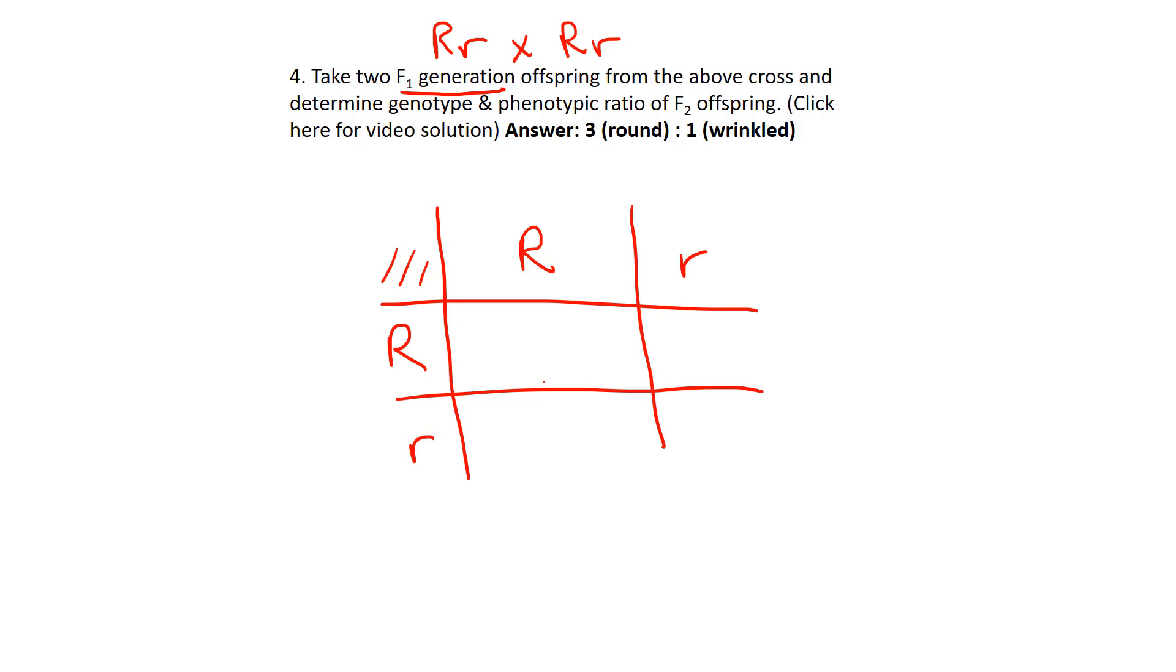One parent on top. We don't know male or female, so it's arbitrary who we put on top or the side. Fill in the Punnett square. We see that that's round. Again, when we're filling in the Punnett square, we're simulating fertilization.